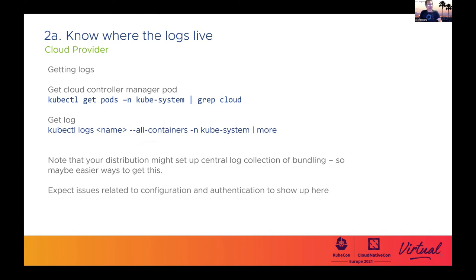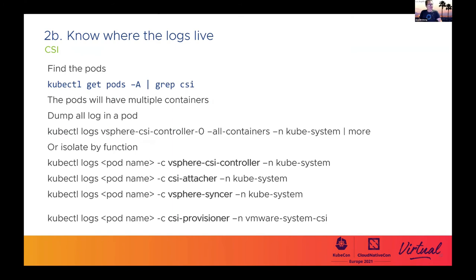Top three item 2A. Moving on, here's item 2B — knowing where the logs live, in this case for the CSI storage driver. First step is to get the pods that are running CSI components. These pods will have multiple containers, and you can use kubectl commands to grab those logs for the CSI-related components.